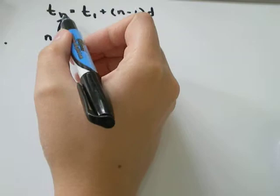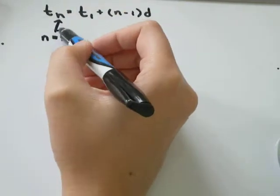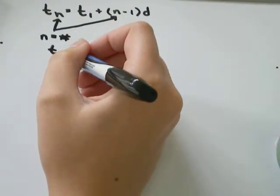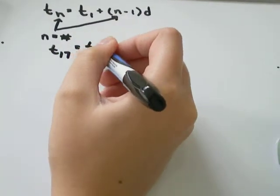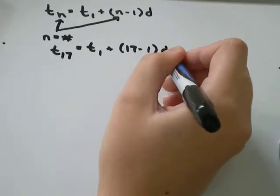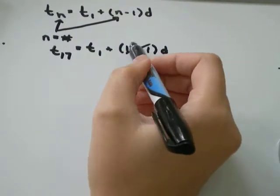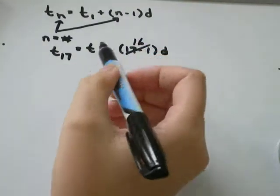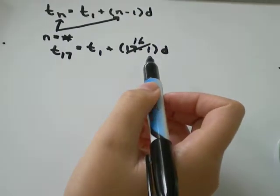Wherever you see n, you'd replace it with 17, which means you'd also replace that n with 17. So you would have t_17 equals t_1 plus 17 minus 1 times d. 17 minus 1 is 16. And then you would need a few other pieces of information to plug into this formula to make it work.